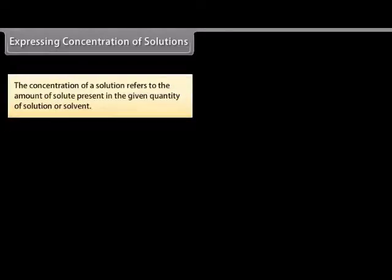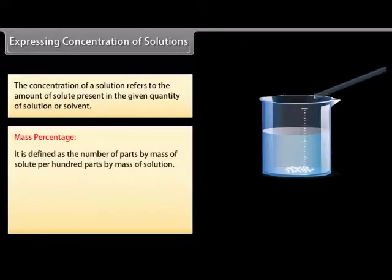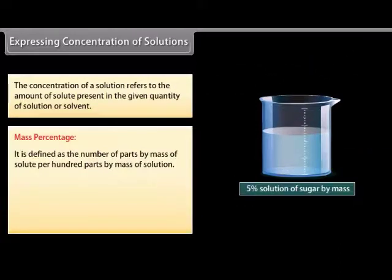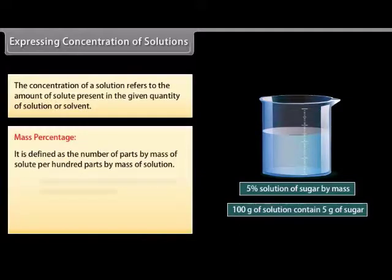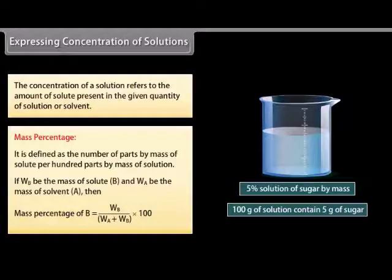The concentration of a solution refers to the amount of solute present in the given quantity of solution or solvent. Mass percentage is defined as the number of parts by mass of solute per hundred parts by mass of solution. If W_B be the mass of solute B and W_A be the mass of solvent A, then mass percentage of B is equal to W_B divided by (W_A plus W_B), multiplied by 100.